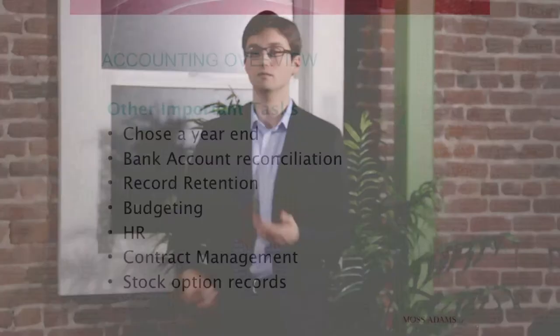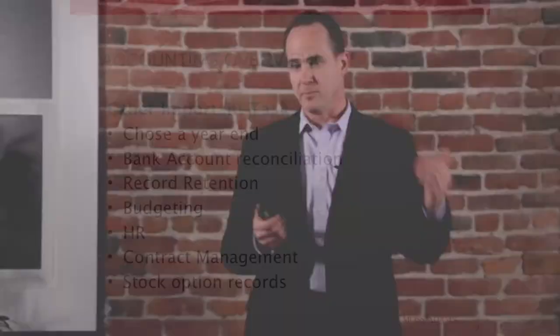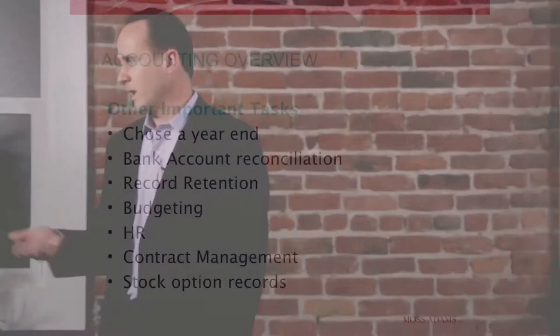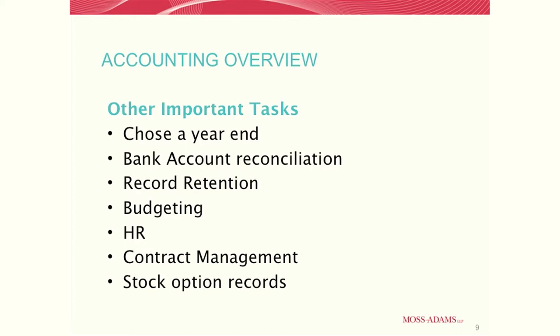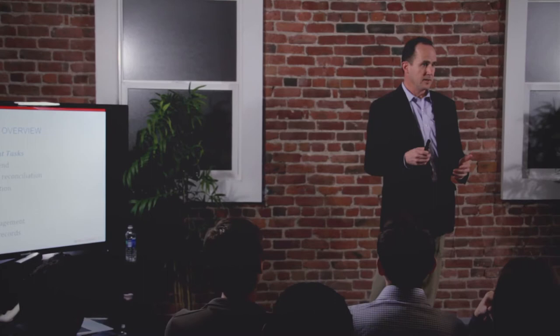Some other miscellaneous items. Choose a year end. Everyone needs a year end. Most people are on the calendar year. It's easier. Bank account reconciliations, just like your own personal checkbook, but you will have a different business account. Make sure you reconcile it every month. Record retention: your organizational documents keep forever. Equity information keep forever. Tax records generally is a seven year rule of thumb. Your financial statements, generally plan on keeping those forever. Your box of receipts, three, four years, enough to support if audited.